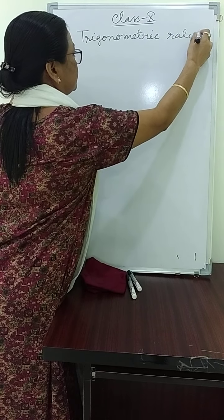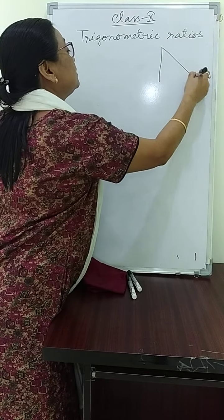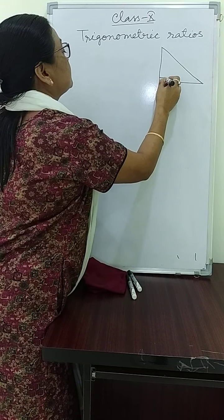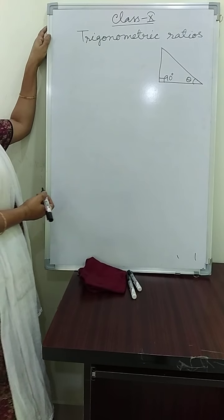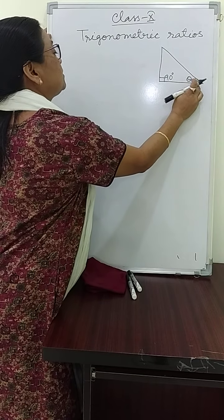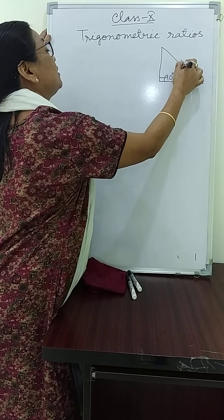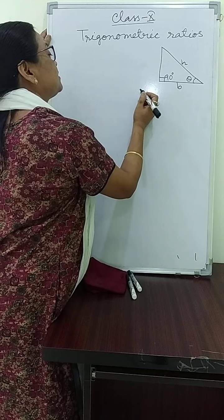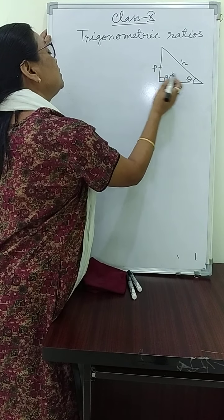What are called trigonometric ratios? So all of you know this is a right angle triangle. This angle is 90 degrees and let this angle be theta.